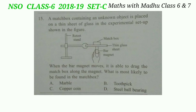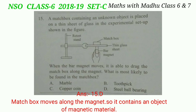Question 15: a matchbox containing an unknown object is placed on a thin sheet of glass in an experimental setup. When the bar magnet moves, it is able to drag the matchbox along with it. What is most likely found in the matchbox? The options are marble, toothpick, copper coin, or steel ball bearing. Since the matchbox moves along with the magnet, it must contain a magnetic material — steel ball bearing. The correct answer is option D: steel ball bearing.